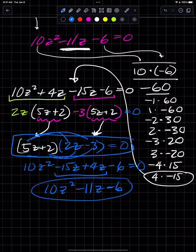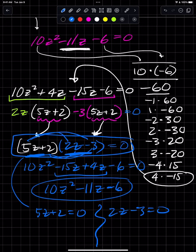Now to get the answer, I have to set these individual factors equal to zero. So 5z plus 2 equals zero and separately 2z minus 3 equals zero. Subtracting 2 and dividing by 5, I get z equals negative 2 fifths. Adding 3 and dividing by 2, I get z equals 3 halves. And that's what we get for our answer.